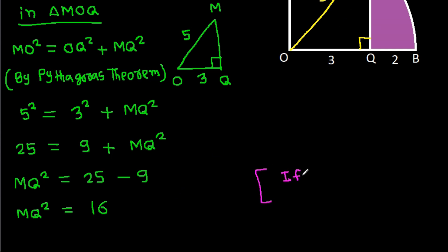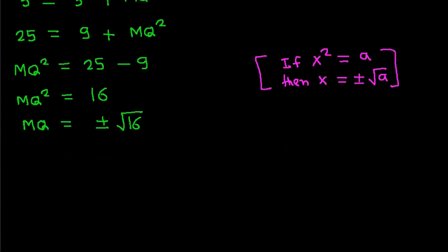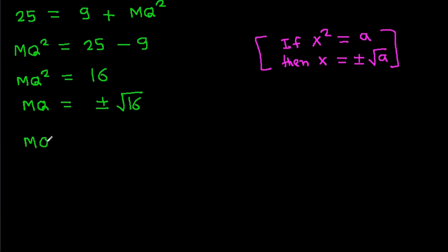If x squared equals a, then x equals plus or minus square root of a. So here, MQ will be plus or minus square root of 16. Square root of 16 is 4, so we get MQ equals 4 or MQ equals minus 4.